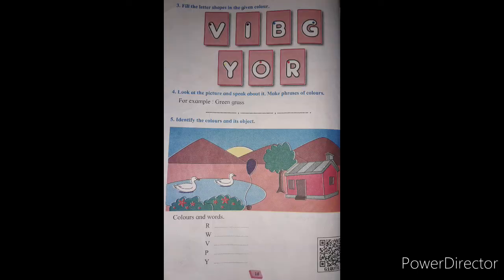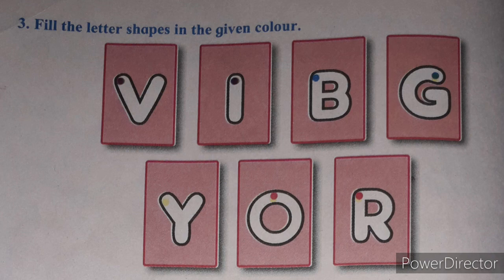Now here is a fun activity: fill in the letter shapes in the given colors. Look at these letter shapes — you have to fill the colors using your crayon. A small dot of color is already given inside each shape, so you can follow that color and fill it in. These are the first letters of the color names.